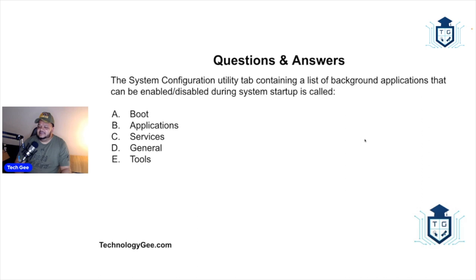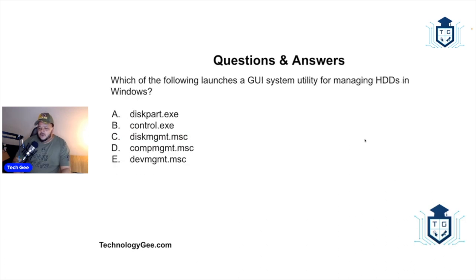The System Configuration utility tab containing a list of background applications that can be enabled and disabled during system startup is called the Services tab — that's where you can find that information.